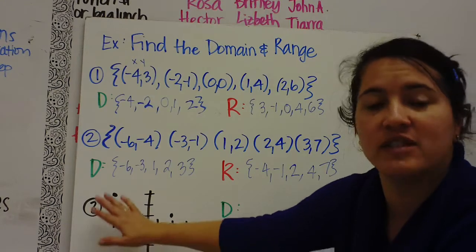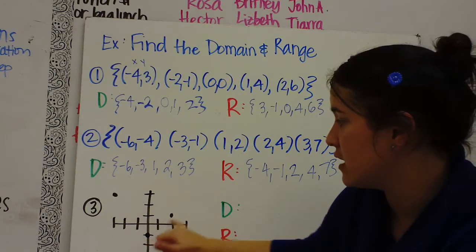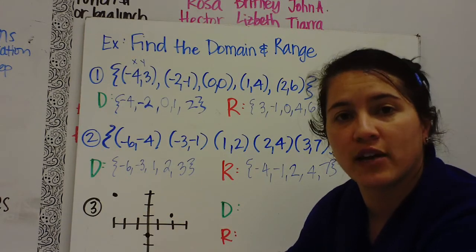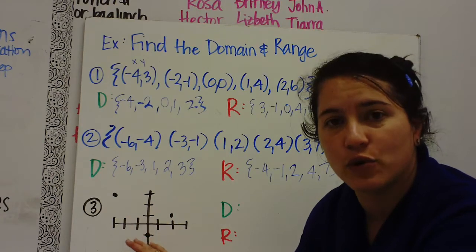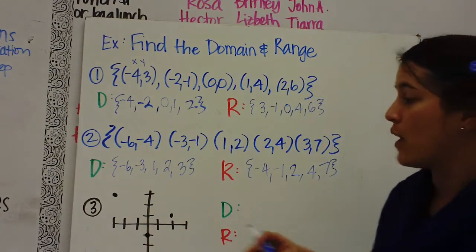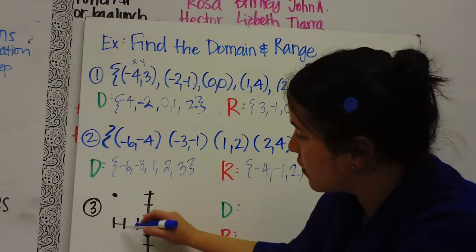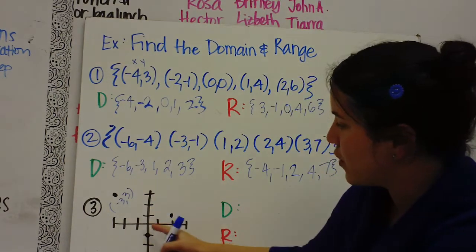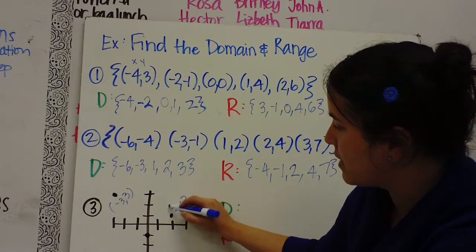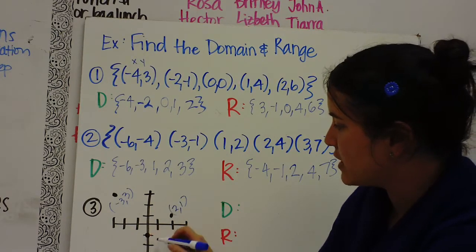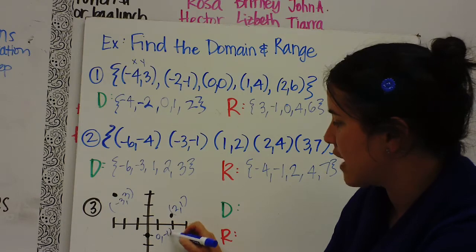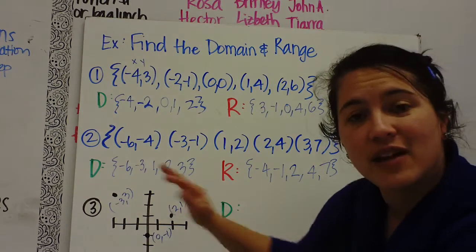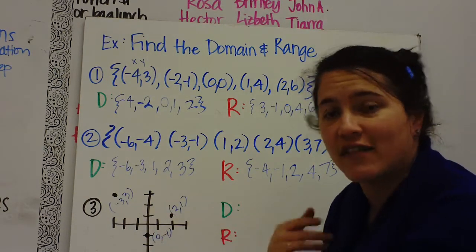Now number 3 is a relation because you have a set of ordered pairs. Do you see these dots? These dots are your set of ordered pairs. So if you need to find the domain of ordered pairs, you have to find those points. So this value is going to be negative 3, up 3. That is that point. This point is over 2, up 1. And this point is over 0 and down 1. Now that I have my three ordered pairs, I can find the domain and the range.